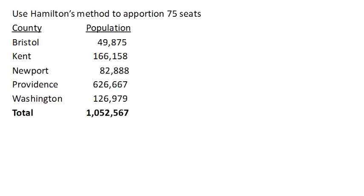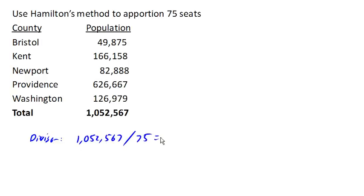We're going to use Hamilton's method to apportion the 75 seats of Rhode Island's House of Representatives among its five counties. The first thing we need to do is find our divisor by dividing the total population by the number of seats. We end up with about 14,034.23 — this is the number of people that each representative should ideally be representing.